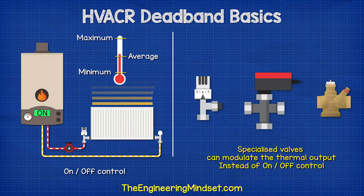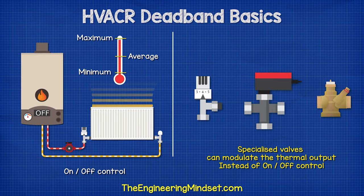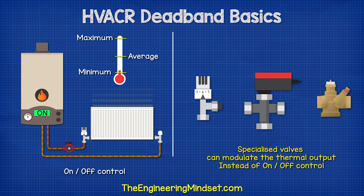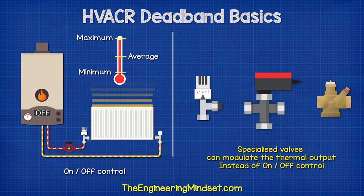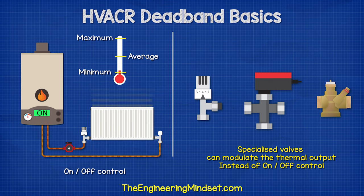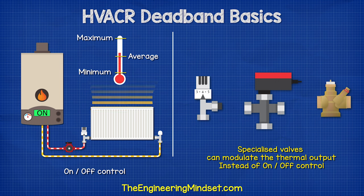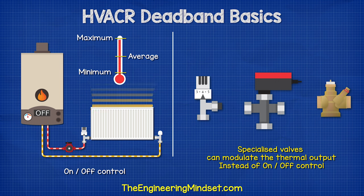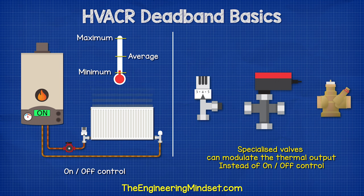On and off control makes it difficult to maintain a desired temperature. Instead, we can use special valves to modulate the thermal output, keeping the temperature within a certain dead band.